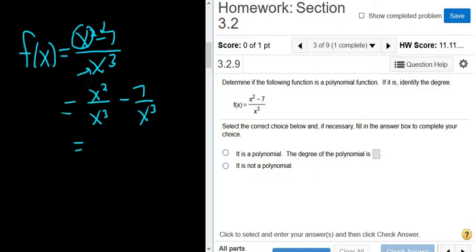We can simplify this. We have x squared over x cubed, so we're left with 1 over x because two of the x's cancel. Then we have minus 7 over x cubed. This is not a polynomial. You're not allowed to have x's on the bottom like this.